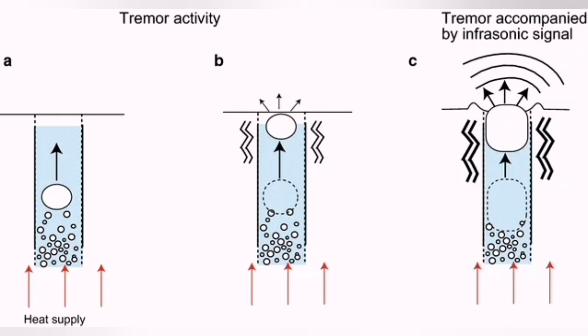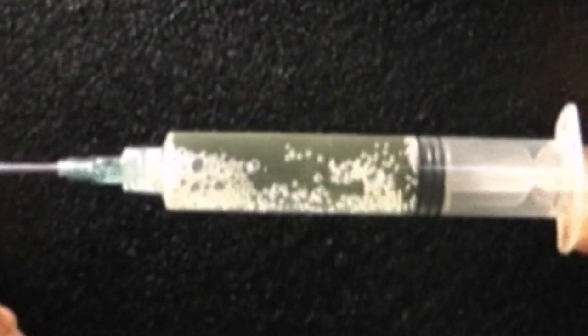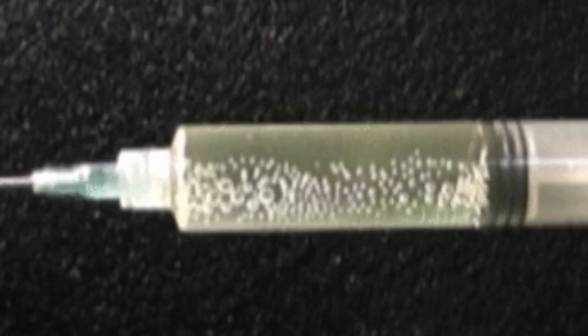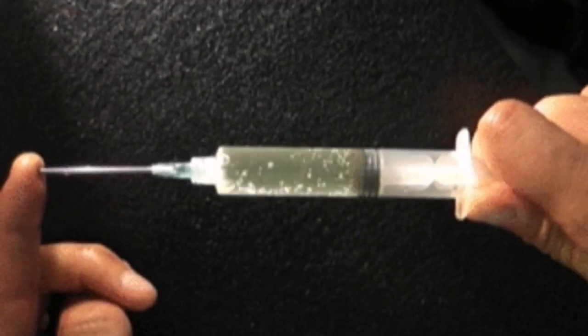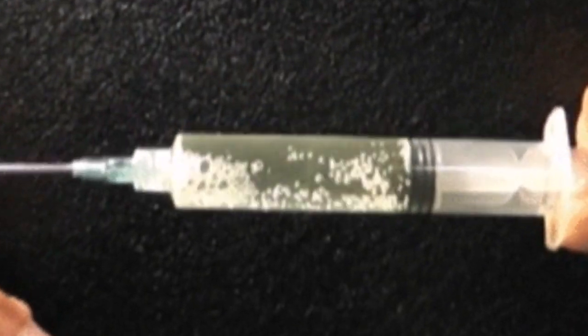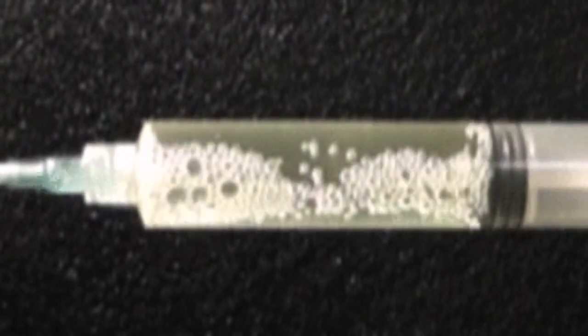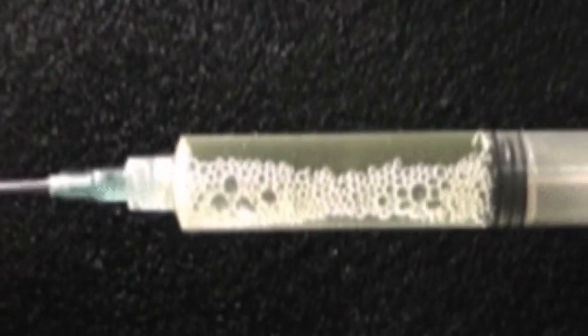Take a syringe, fill it up with liquid, put your finger on it, and pull back the plunger. You will see that bubbles form inside it. Do it several times and you can see that as the pressure is removed, bubbles of different sizes form. This is the reason that on the Reykjanes Peninsula we have these tremors.